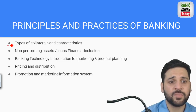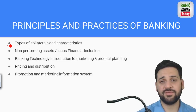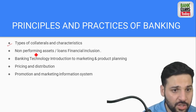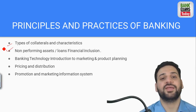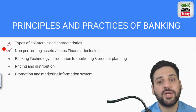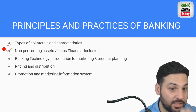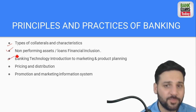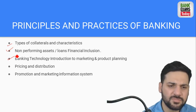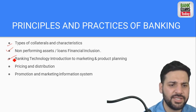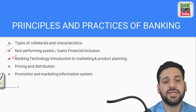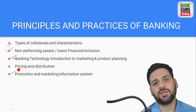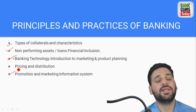Topics include what is collateral, what is the difference between security and collateral, what is a mortgage. Non-performing assets, what is PCA, which banks it is applied to, and what are its stages - you should know all this. Pricing, distribution, banking technology - what kind of technology is used in banks - this topic is not very important. Promotion, marketing information, and MIS are also covered. Notes for all of these have been prepared and are available for download - the link is in the description.